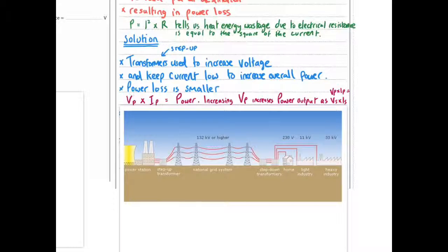Now the reason this works is because you need to remember that Vp times Ip equals power. Voltage times current is power. So if Vp times Ip, the input voltage and current, equals the output voltage and current, if they're related, then if you increase the voltage here you'll increase the power output as well.